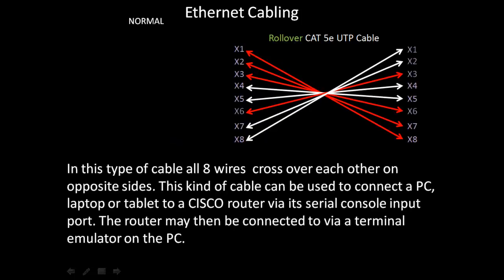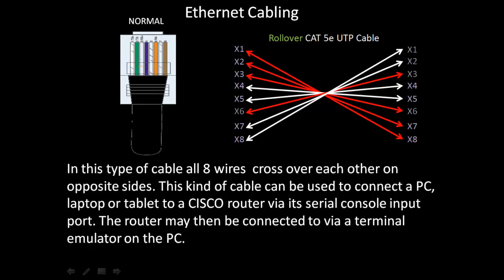Another type of Ethernet cabling is a rollover cable — again Category 5e unshielded twisted pair. One side of a rollover cable is normal, and the other side simply inverts every single wire, so all eight wires cross over each other on opposite sides. This kind of cable can be used to connect a PC, laptop, or tablet to a Cisco router via its serial console input port. The router may then be connected to via a terminal emulator on the PC, such as HyperTerminal.